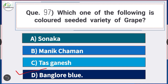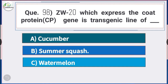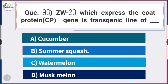Question number 98: ZW20 which expresses the coat protein gene is a transgenic line of — answer option B — summer squash. ZW20 which expresses the coat protein gene is a transgenic line of summer squash.